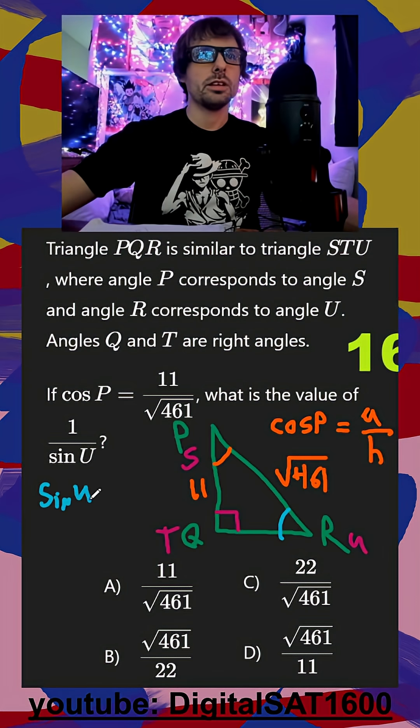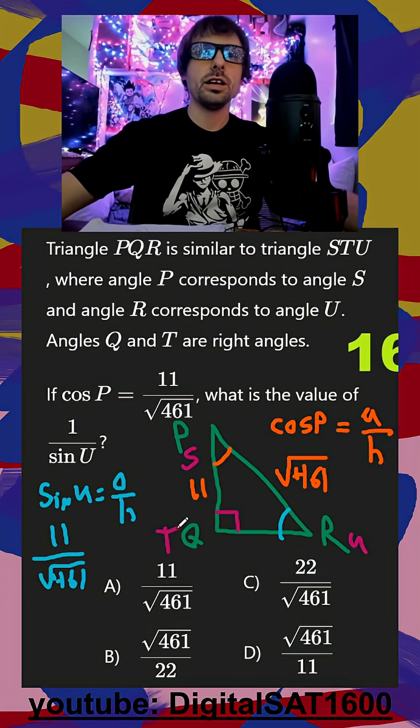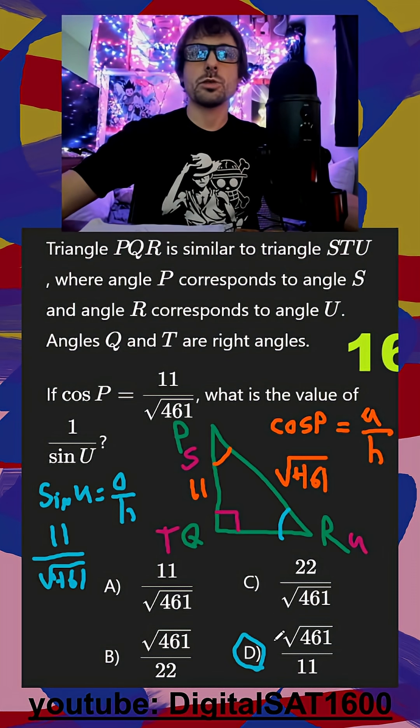Sine of U is going to be equal to our opposite over our hypotenuse, which is going to be 11 over square root of 461. But since it's one over that, you actually just do the reciprocal. So we should be looking for square root of 461 over 11, which is D.